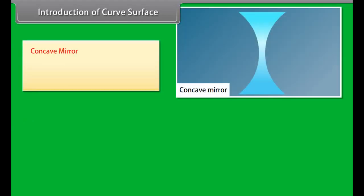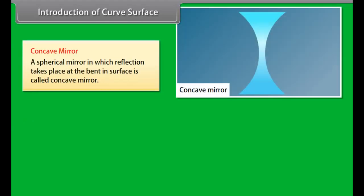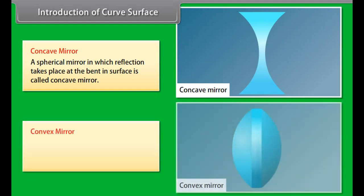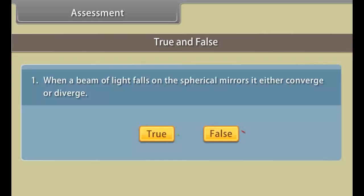A concave mirror is a spherical mirror in which reflection takes place at the bent-in surface. A convex mirror is a spherical mirror in which reflection takes place at the bulging-out surface.